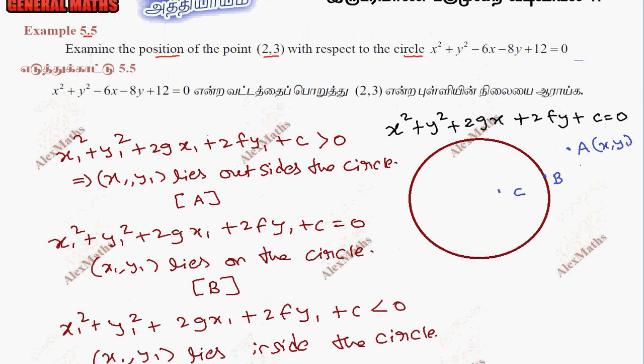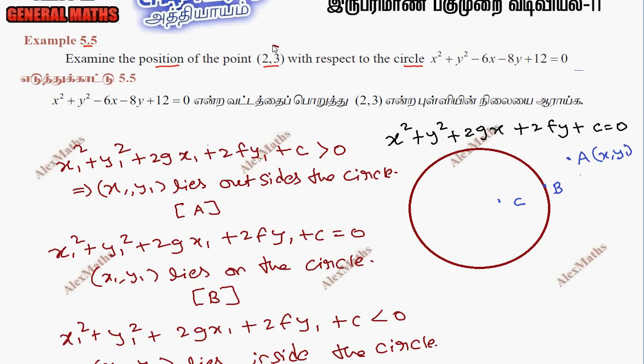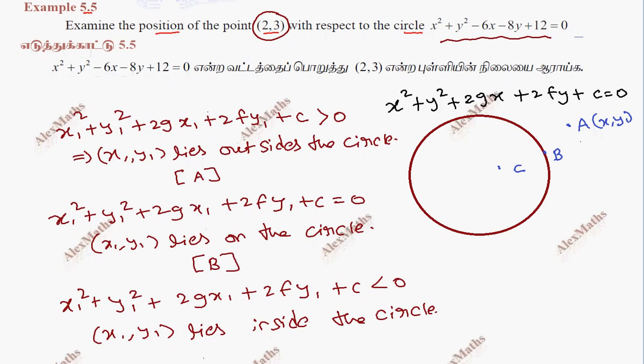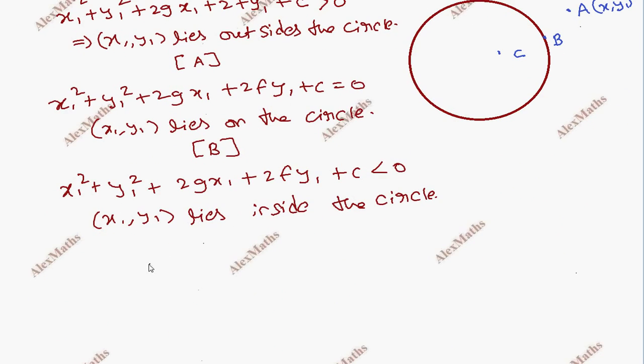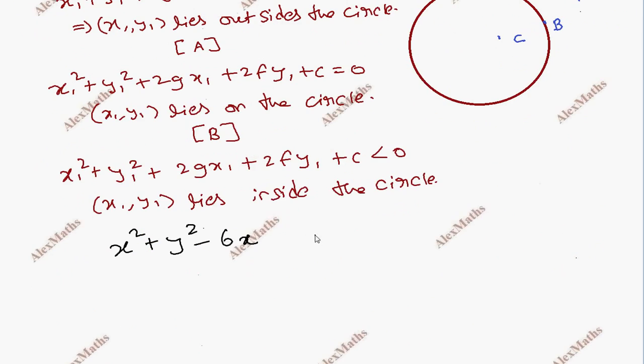If we use this condition, we substitute this equation. So it is equal to x² plus y² minus 6x minus 8y plus 12 equal to 0.